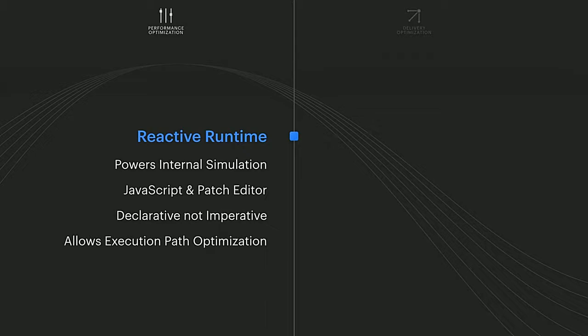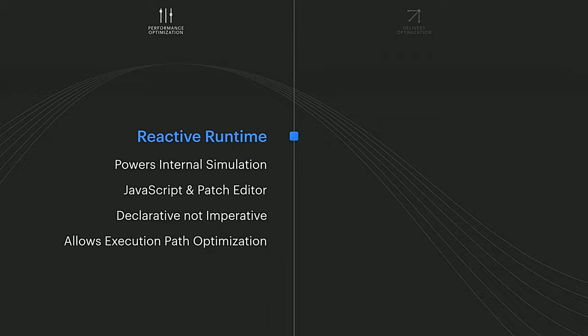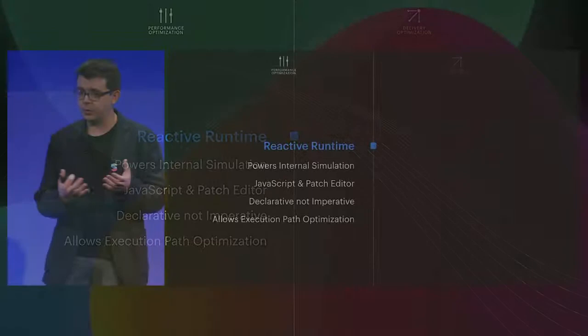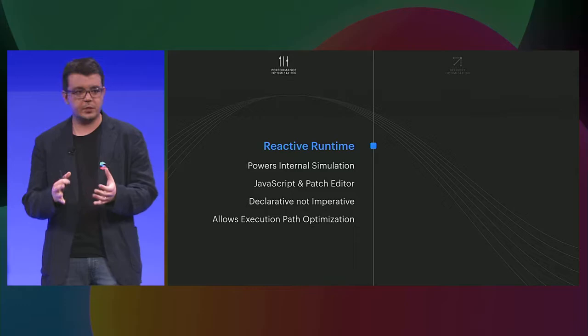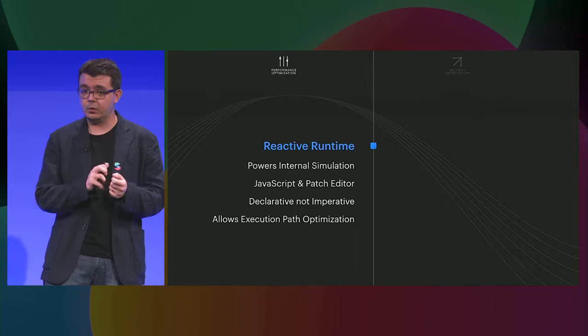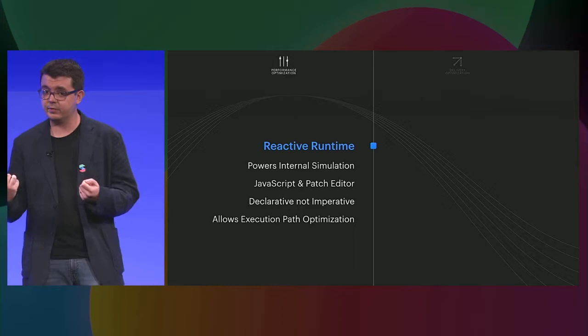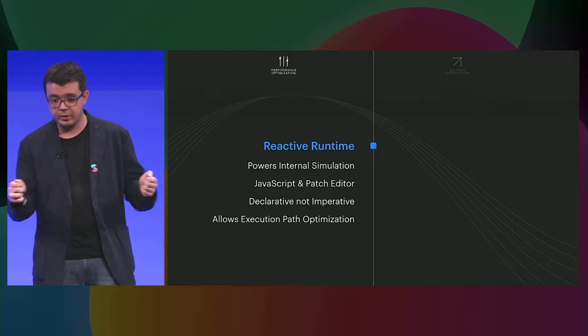Last but not least, reactive runtime. What do we mean by reactive? What we mean is that it's more declarative than imperative as our programming model for JavaScript. What this means is that it's fully data-driven, so we don't execute the full simulation every frame. Rather, we pick only the things that changed — we know what's going to happen next because it's declarative as well — and we can allow the fastest, most streamlined execution path optimization out there.